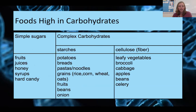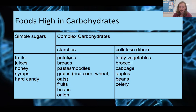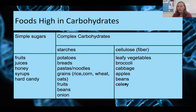Foods high in carbohydrates include different types. Simple sugars or monosaccharides are quick energy sources — fruits, juices, honey, syrups, and hard candies. Complex carbohydrates like starches come from potatoes, breads, pastas, grains, fruits, beans, and onions. Cellulose or fiber comes from leafy and green vegetables with lots of plant cell walls. If you break celery apart, you can see it pull apart in strings — those are the cellulose fibers.